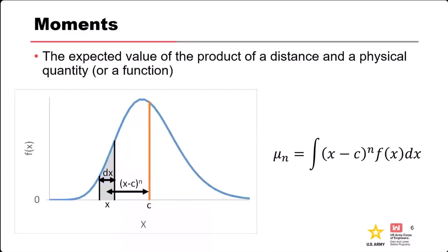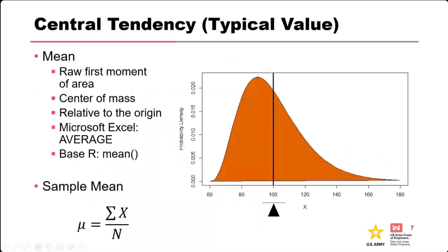In engineering mechanics, we're often interested in distance from the centroid — for example, when talking about moment of inertia. Similarly, in probability and statistics, we're interested in either the distance from the mean of our data or the distance from the origin. Formally, it's the integral of this distance raised to some power times the value of the function. The N is the moment order — N can be the zeroth, first, second, third moment, et cetera. And F of X can be any function or, in engineering mechanics, an object like an I-beam.